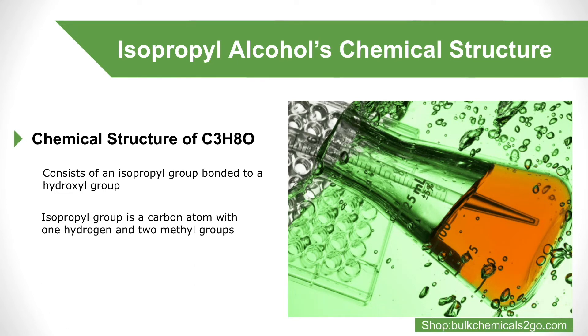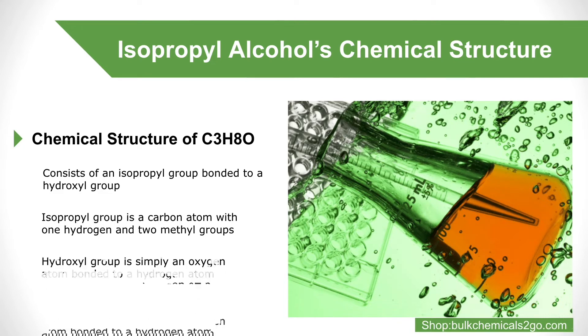An isopropyl group is a carbon atom with one hydrogen and two methyl groups — a carbon plus three hydrogens attached to it. A hydroxyl group is simply an oxygen atom bonded to a hydrogen atom.